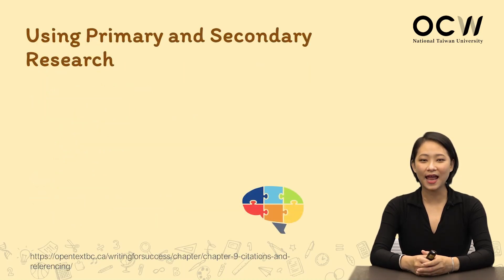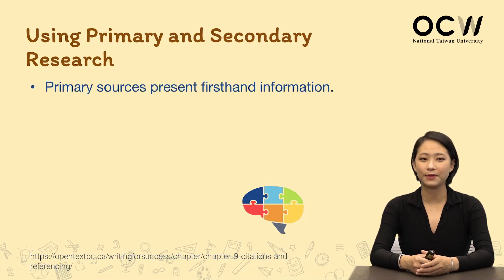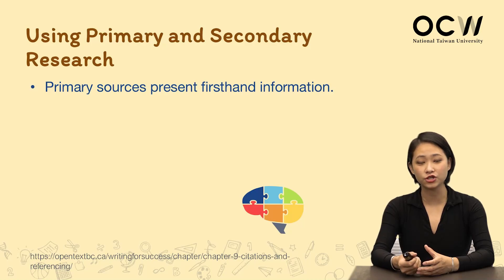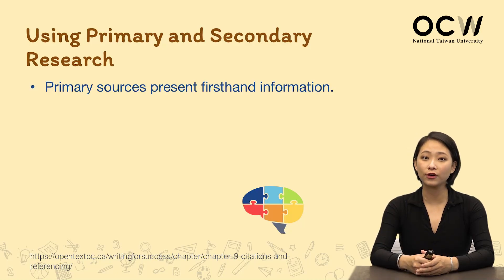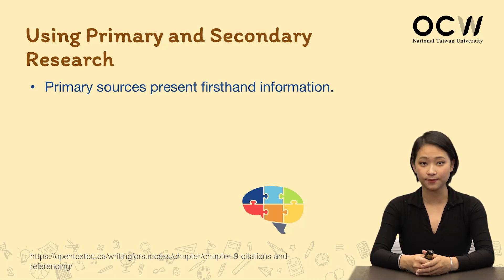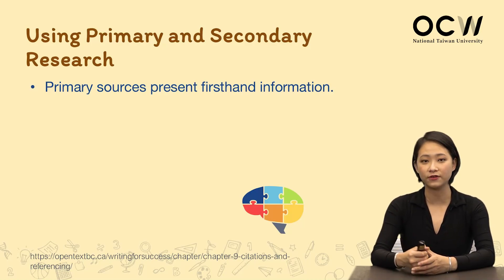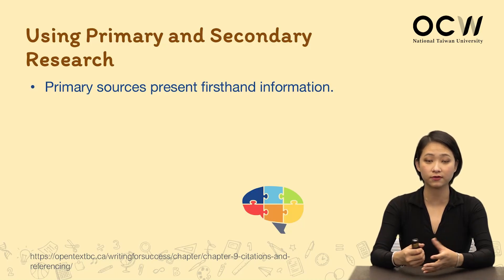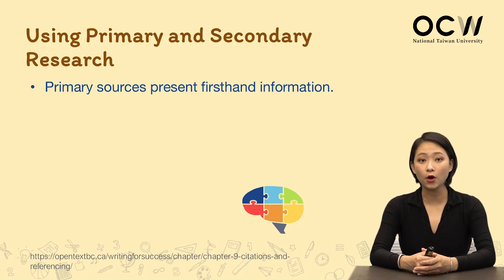What exactly is primary and secondary information? Primary information usually presents first-hand information. So for example, if today your research involves field study — you as the researcher went into the field and studied, let's say, birds — those will be primary information.